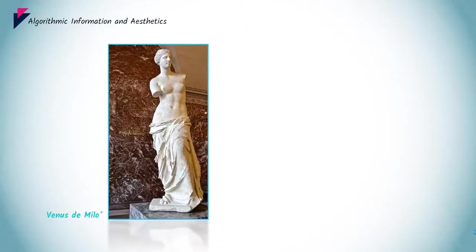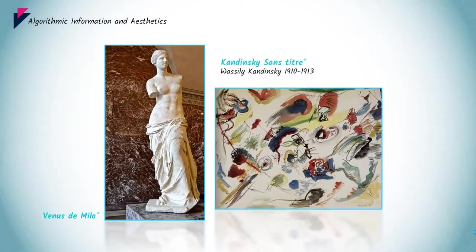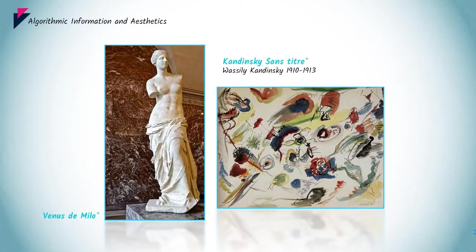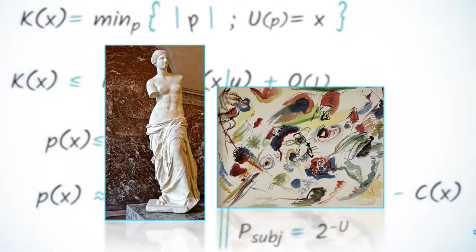What can be considered as beautiful? Can we encapsulate beauty into an equation? Certainly not. Does algorithmic information theory have something to say about aesthetics? Probably yes. This is what this video will suggest.